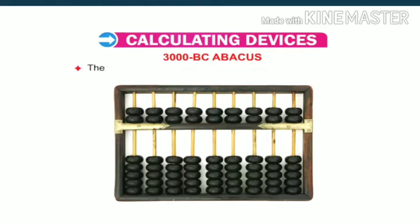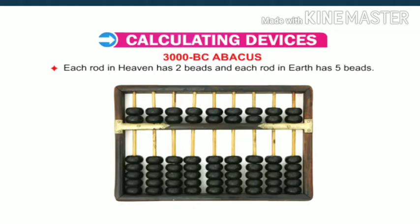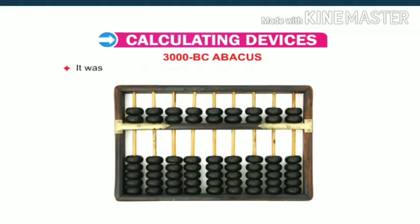The frame is divided into two parts: heaven and earth. Each rod in heaven has two beads and each rod in earth has five beads. It was used for addition, subtraction, multiplication and division.